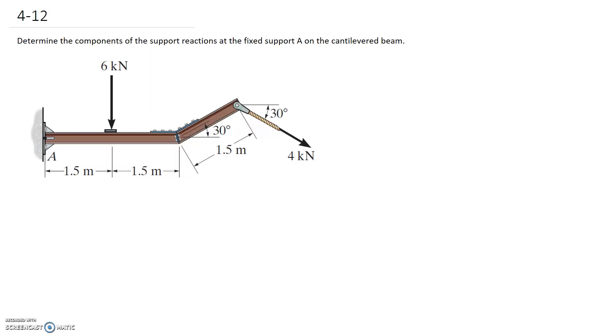So for this question we're asked to determine the components of the support reactions at the fixed support A on the cantilever beam. The first step is going to be to draw the free body diagram. So let me just quickly redraw the structure.